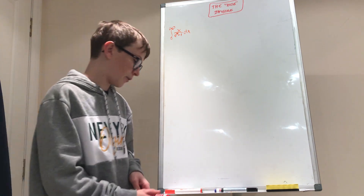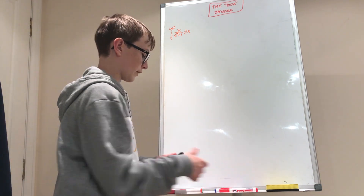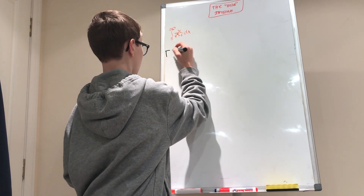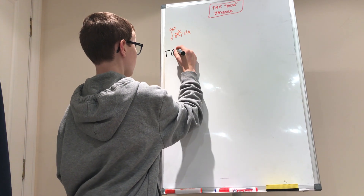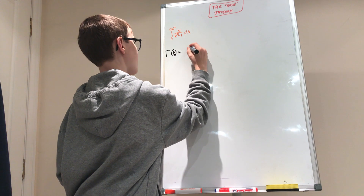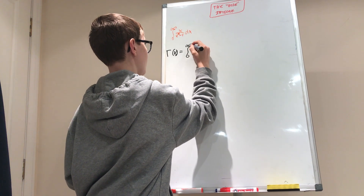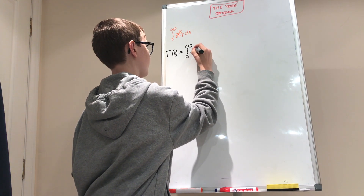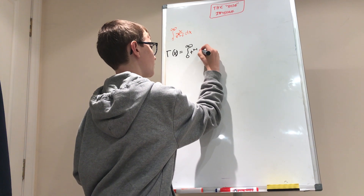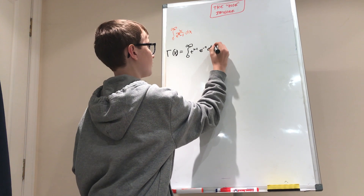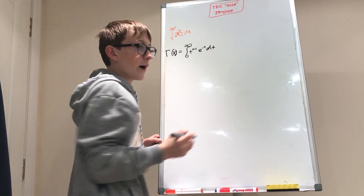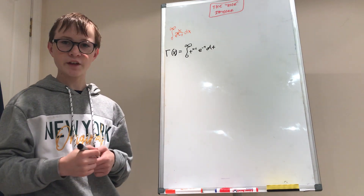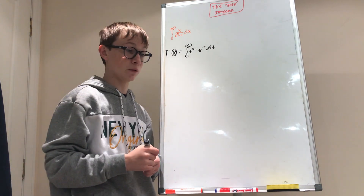So let's start by looking at gamma of x. Gamma of x equals the integral between 0 and infinity of t to the power of x minus 1 times e to the negative t dt. And you'll know from my previous video that gamma of x is just x minus 1 factorial.